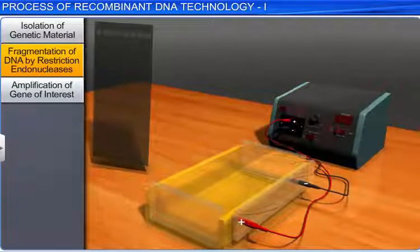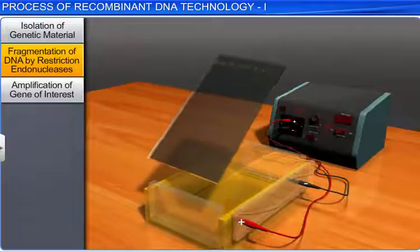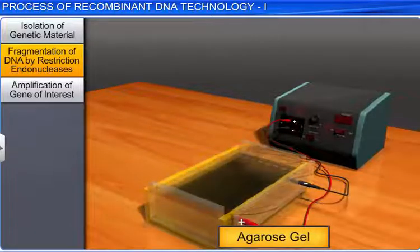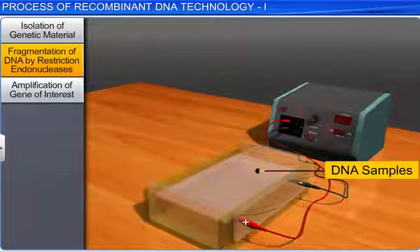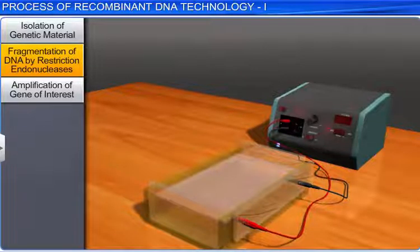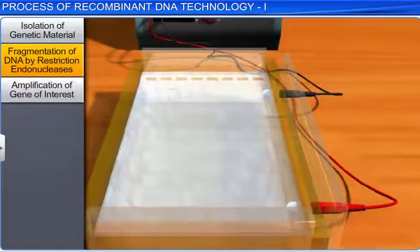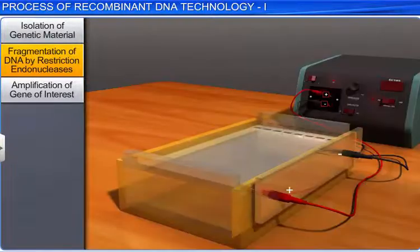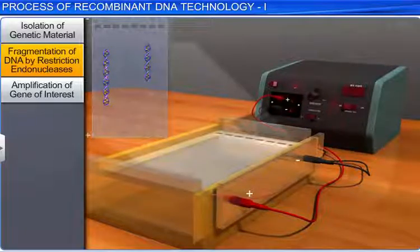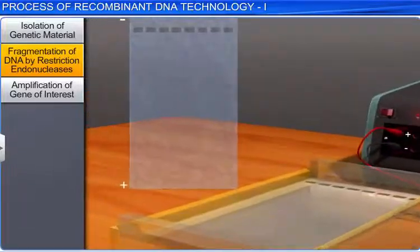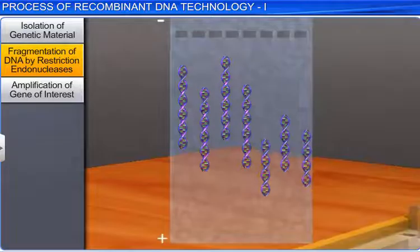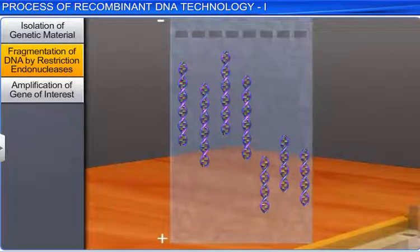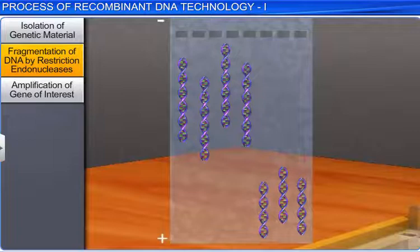Typically, the gels used in this process are prepared using agarose. DNA molecules are separated across a pan of gel, motivated by an electrical current. Activated electrodes located at either end of the gel chamber produce an electric field. Since DNA is a negatively charged molecule, due to the presence of phosphate groups, it moves towards the positive pole. The separation of fragments occurs according to each fragment's properties, which determine how fast the electric field can move the molecules across the gel.